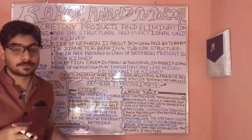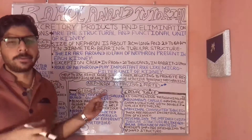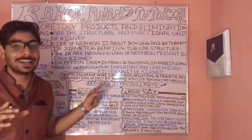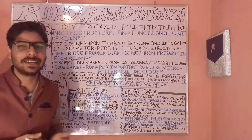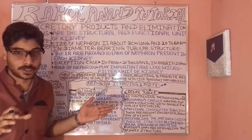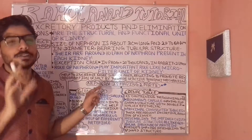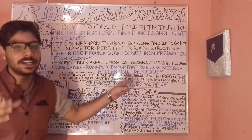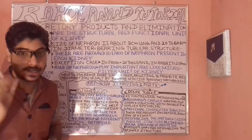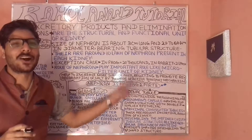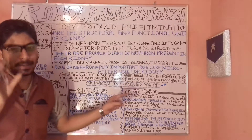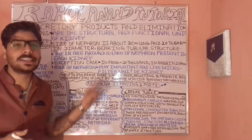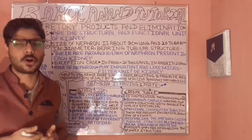As an exception case, in frogs the kidney contains around 20,000 nephrons. In the case of rabbits, their kidney contains around 2 lakh nephrons.